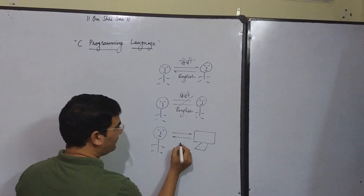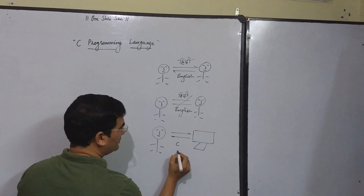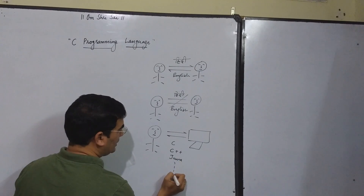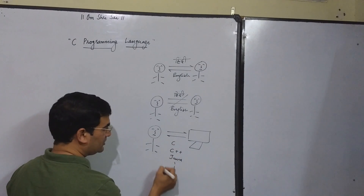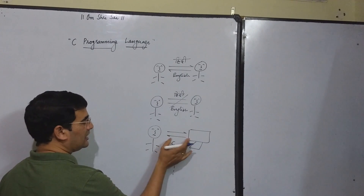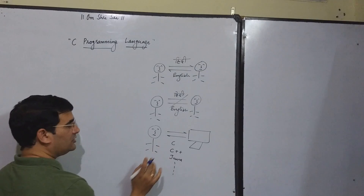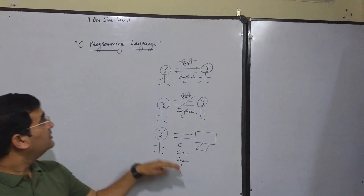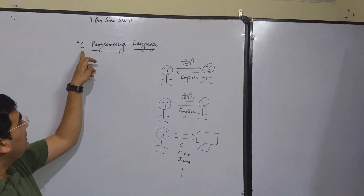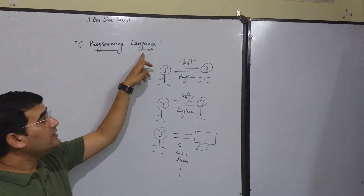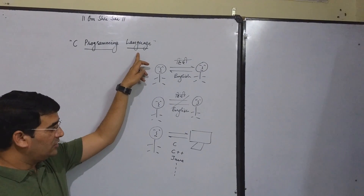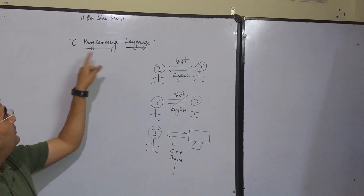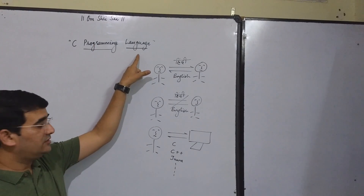To establish such type of communication between human beings and computers, we require a language — a language which could be understood by both sides. Such languages are C, C++, Java, and others. These are the languages used to establish communication between human beings and computers. Hence, we term C as a language.